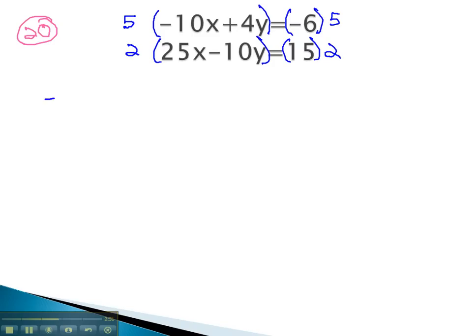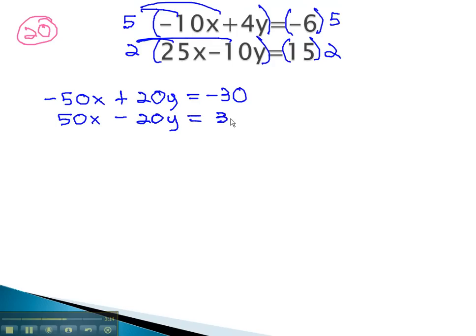We now have negative 50x plus 20y equals negative 30, negative 6 times 5. The second equation, distributing the 2, gives us 50x minus 20y equals positive 30.